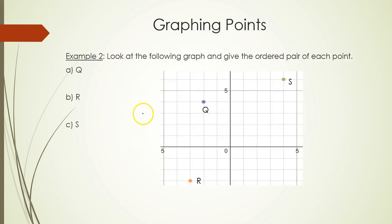Now let's find out the ordered pair for each of the points, starting with point Q. So on the graph, we identified point Q, the horizontal movement is negative 2, the vertical movement is 4. So we have (-2, 4).